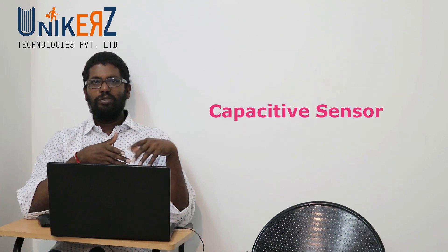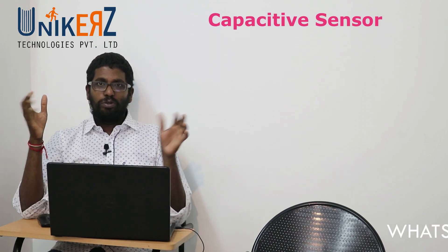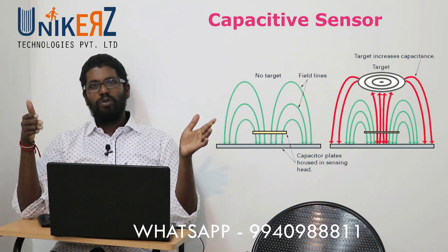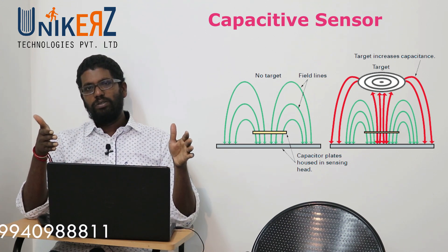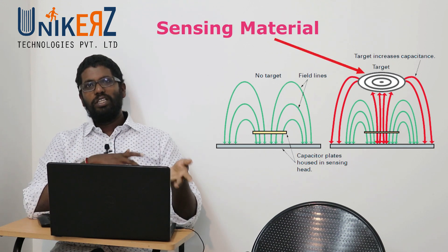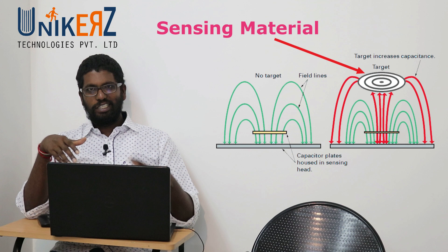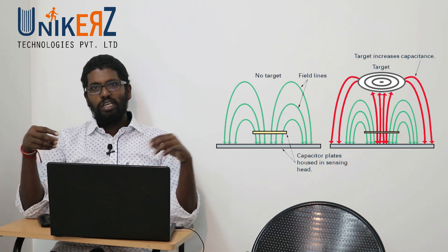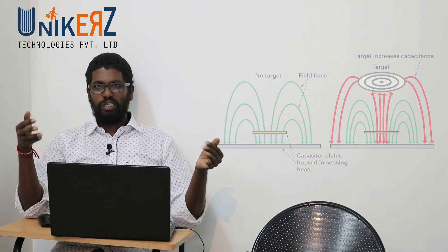The next one is the Capacitive Sensor. This is the same concept. An electro-static field is created. Capacitance is the same kind — there are two capacitive plates with an insulator and sensing material in between. In that case, the insulator triggers a capacitance action, and that is the capacitive sensor.